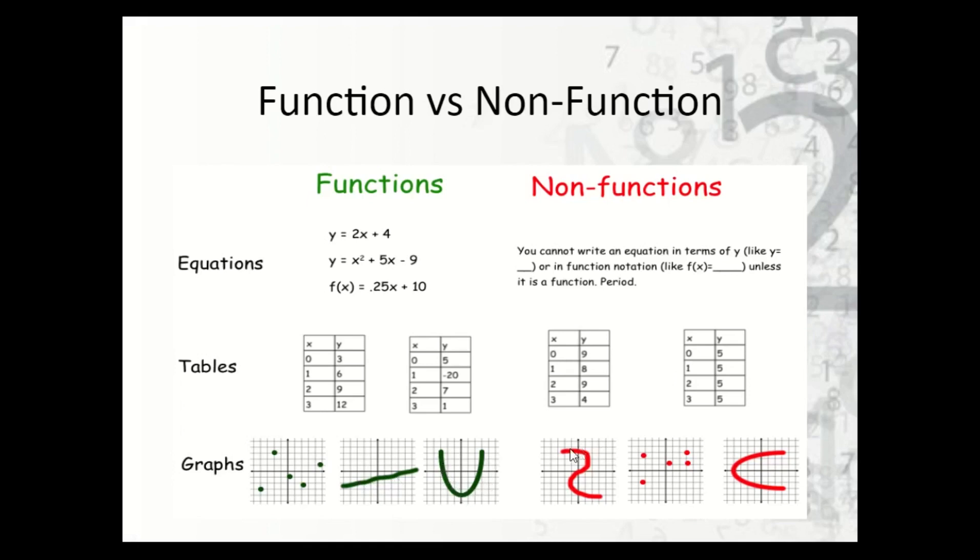Now non-functions look something like this. So notice if I pick an x value like x equals 0, when x is 0, y is this one, it's this one, and it's this one. So there's three different y values that match up. That doesn't work. Same thing here. If we look at this x value right here, there's two values for y that make it true. So that doesn't work. Same thing here. If I pick x equals 0, there are two points. So again, not a function.